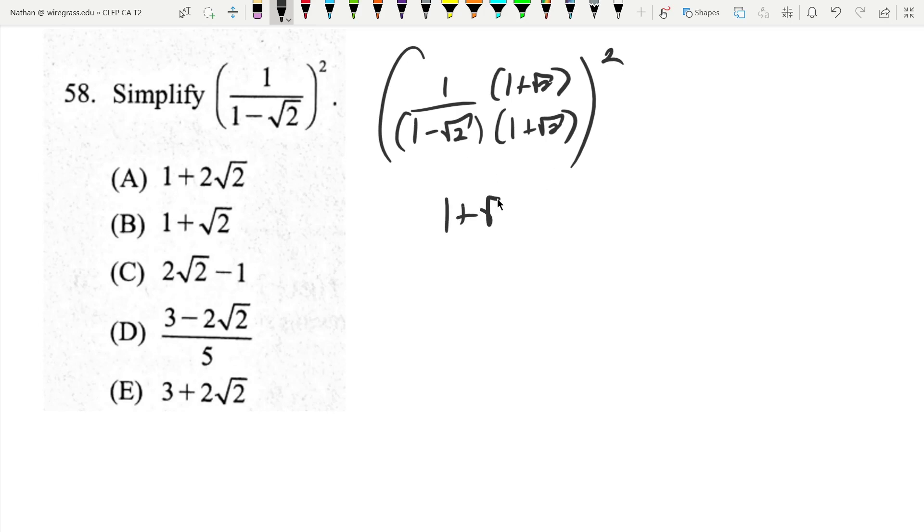So we get 1 plus root 2 on top, on bottom, the cross terms are going to cancel, but 1 times 1 is 1, negative root 2 times positive root 2 is negative 2, and that gives me 1 plus root 2 over negative 1.